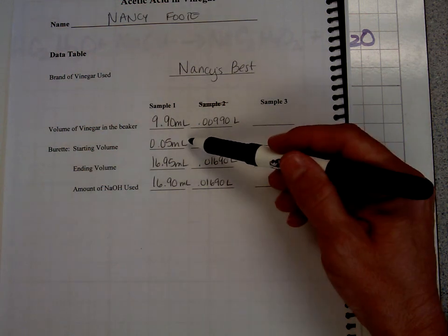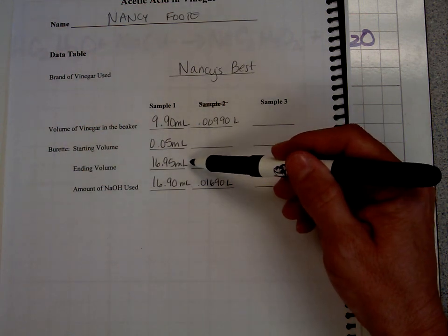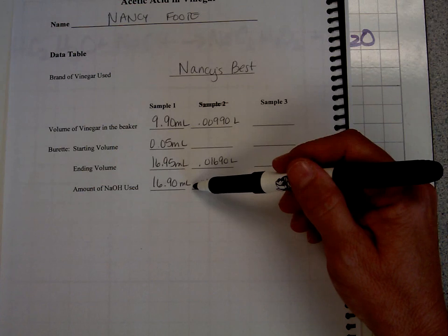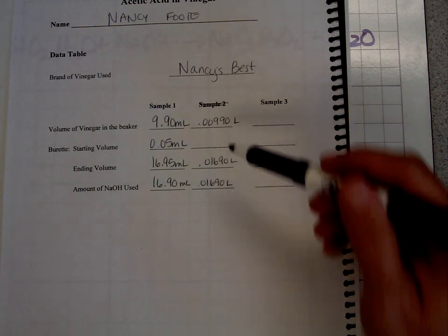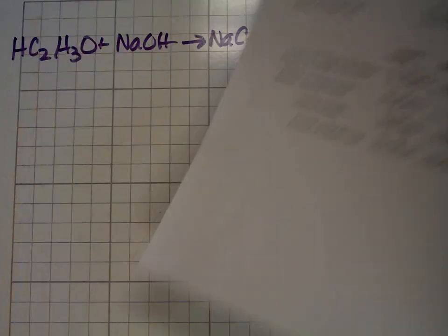Our burette started at 0.05 mL and ended at 16.95 mL, so we used 16.90 mL. Again, you want that in liter form, so it's 0.01690 liters. We're going to use that information.